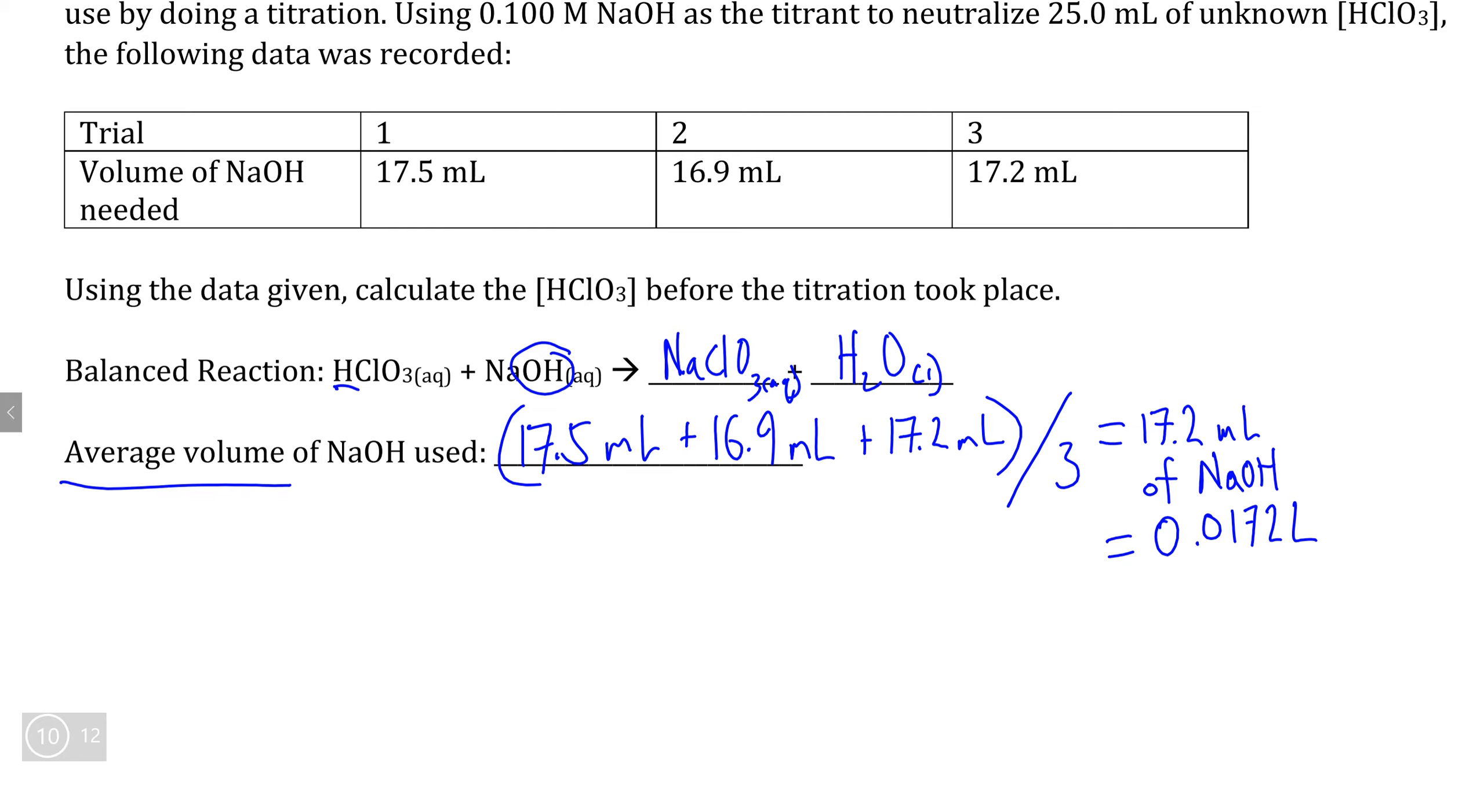If we know what volume of our titrant was added in, we can go back to our known concentration, which is 0.100 moles of NaOH, and we can multiply the average volume of our titrant used, 0.0172 liters. Now that we know the number of moles of NaOH that was added, we know that the mole ratio between base and acid is one to one, meaning that our number of moles of base must also be equal to the moles of acid in our reaction. So we can see left over that we have moles of our acid present.